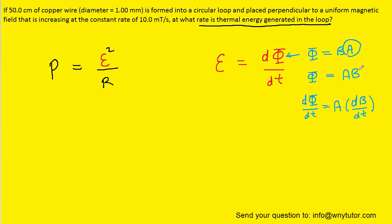Now, the question actually notes that this magnetic field is increasing at the constant rate of 10 millitesla per second. So that 10 millitesla per second is this value that we have denoted dB/dt.